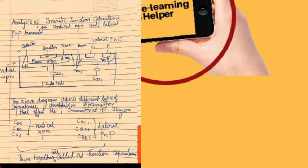The diagram depicts the different types of capacitances developed in the transistor that affect it at high frequency. These are CBE (base-emitter capacitance), CBC (base-collector capacitance), and CS1 (source/substrate capacitance) in the vertical NPN section. Similarly, in the lateral PNP junction: CBC1 (base-collector capacitance), CBS1 (base-substrate capacitance), and CBE1 (base-emitter capacitance). Together these are called the junction capacitances that affect the BJT model in the high frequency circuit.